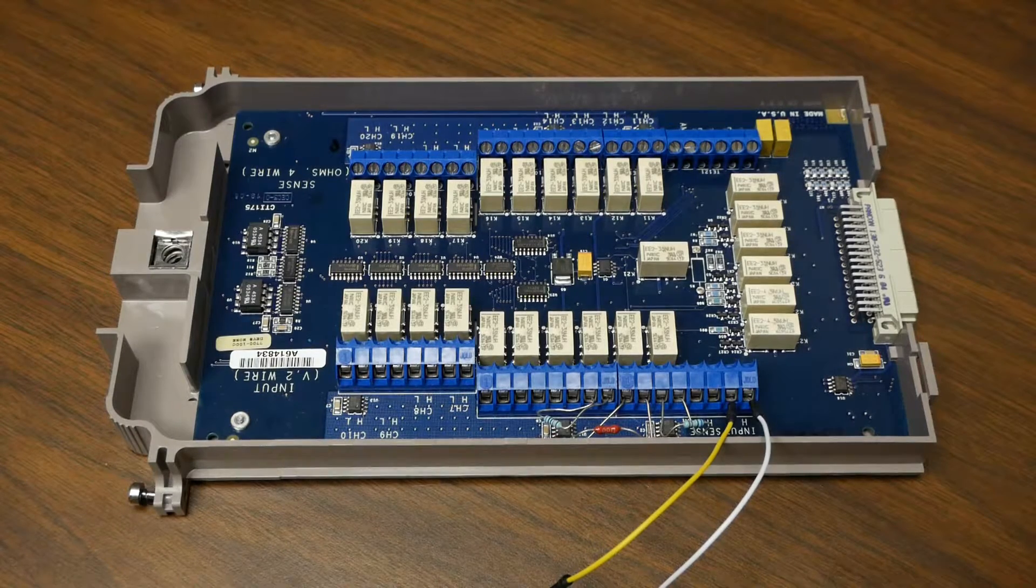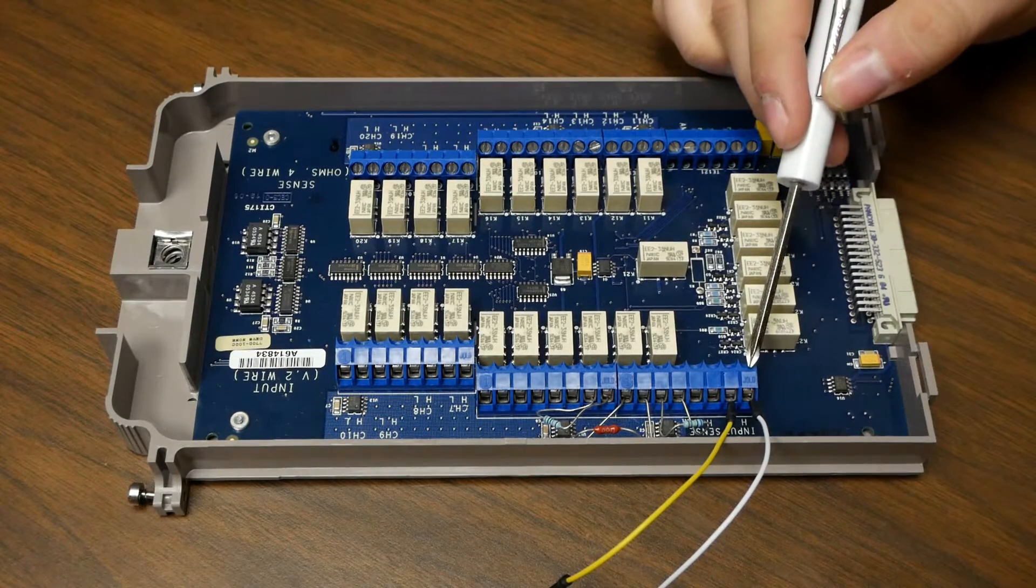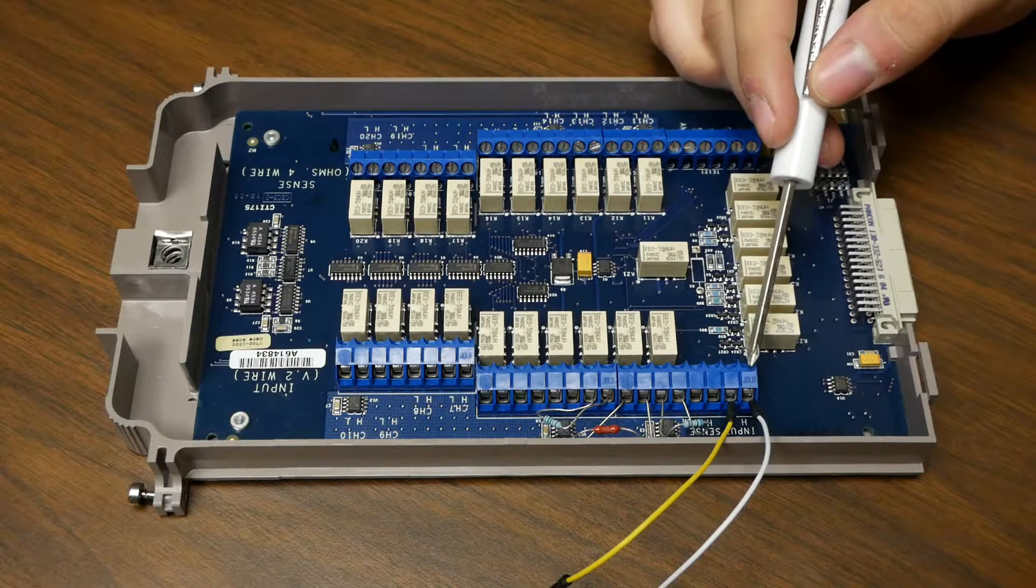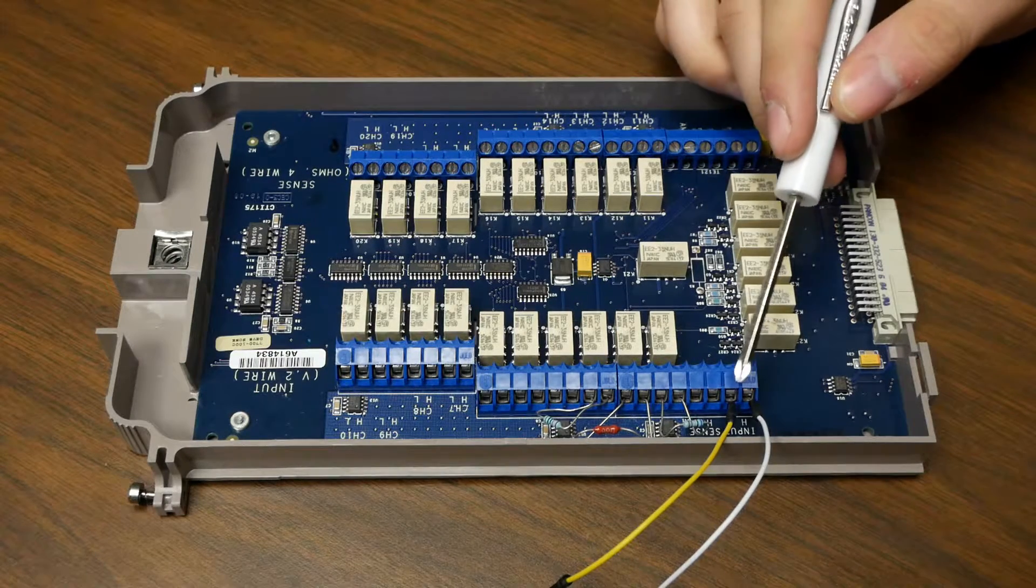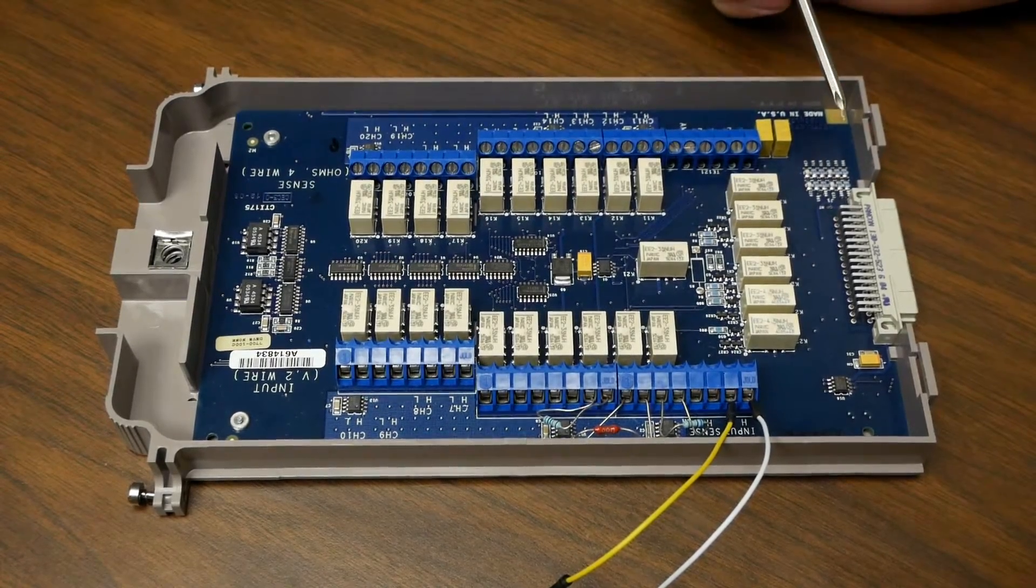Now we're going to configure our 7700 switch card. We'll connect our external instrument, in this case our model 2470 SMU, to the input high and low. This will then run from our jumpers outside of the back of the card and out to our external instrument.